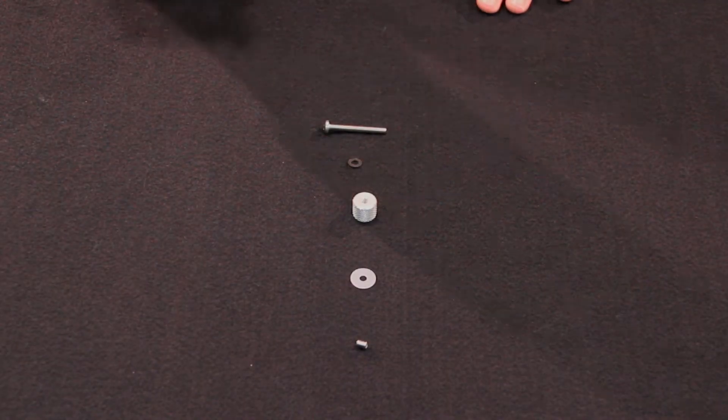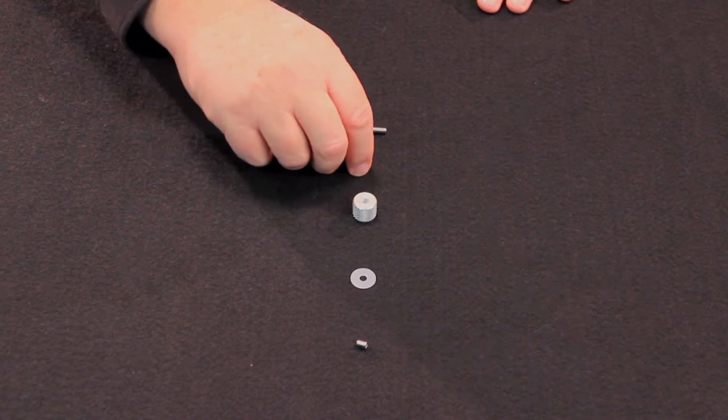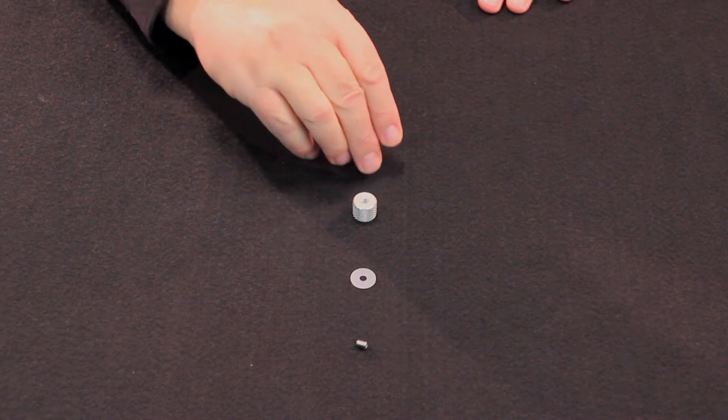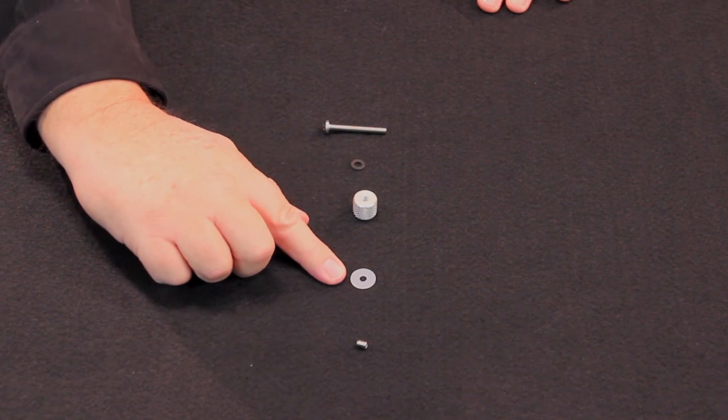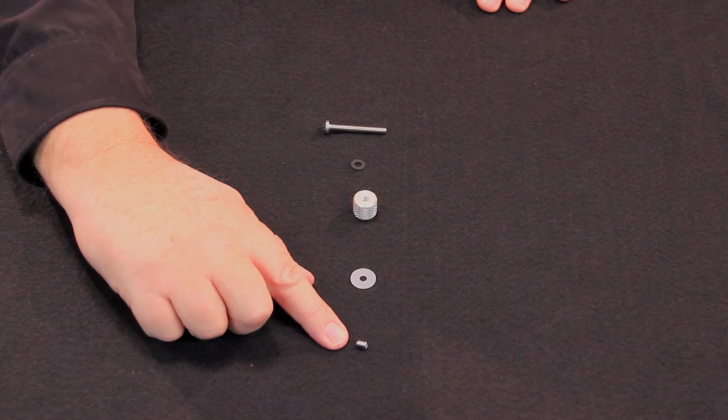The parts involved with the flow adjust knob are a 1 and 5/8 inch 10-32 thread Phillips head screw, a number 10 3/8 inch flat washer, the knurled flow adjust knob, a white plastic flat washer, and the 1/4 inch 10-32 thread set screw.